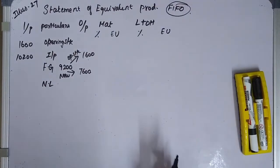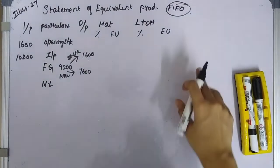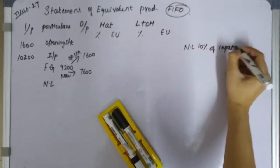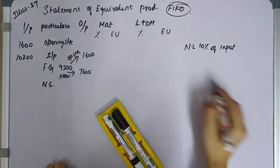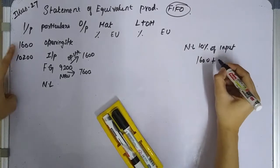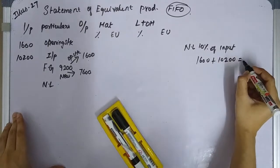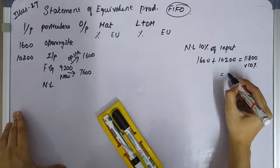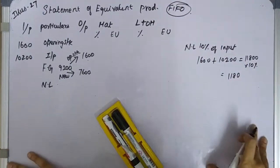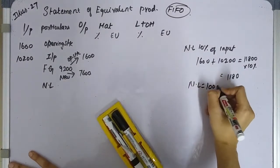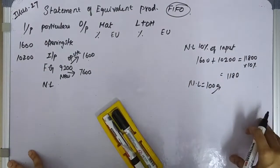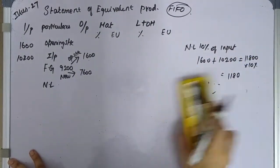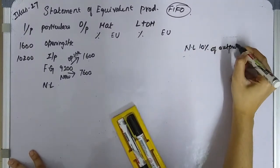Now for normal loss — this is the most important point. Normal loss is 10% of output, not input. That's the key twist. In the question it says 10% of output or production, so you must calculate it based on output.